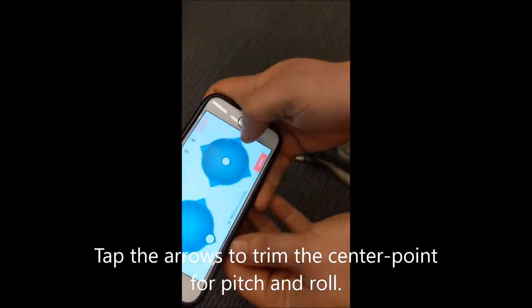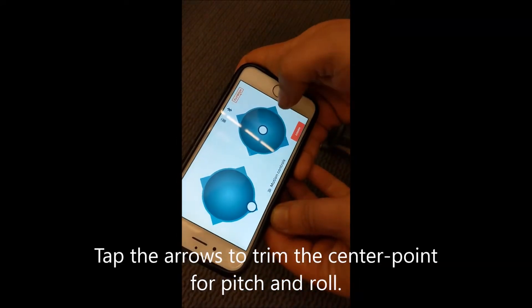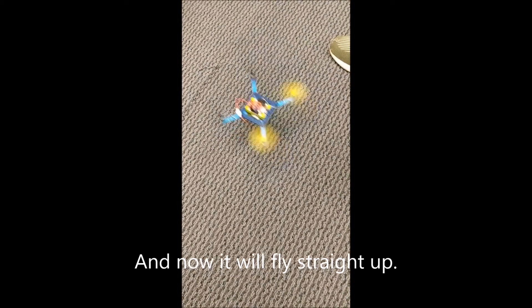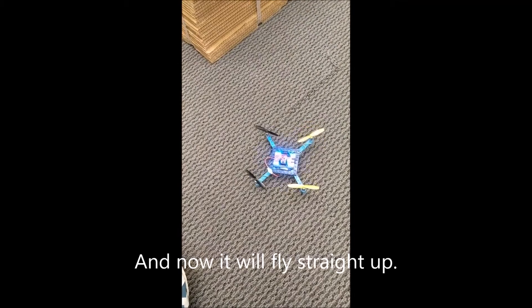What we do is we tap the arrows. You can see it's trimming slightly right and slightly forward. It'll try again. Much better. We go forward and it looks much better.